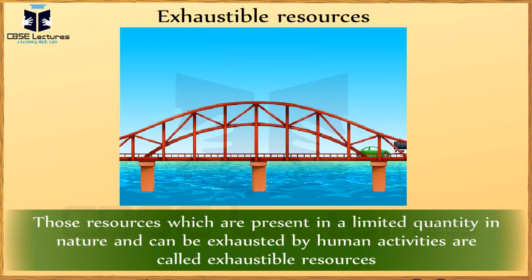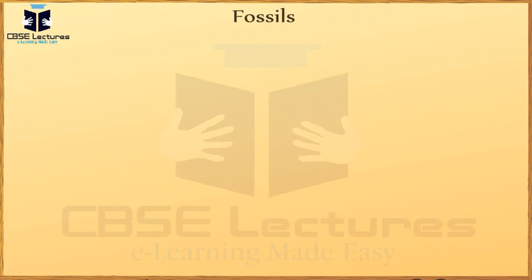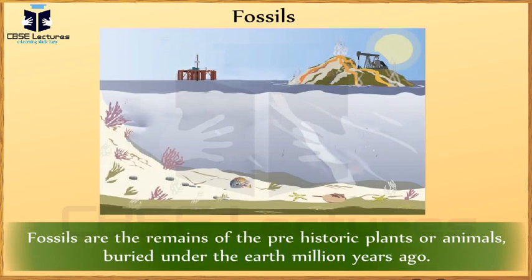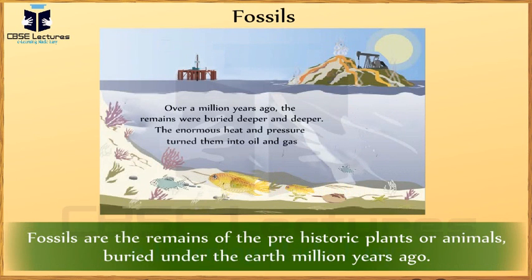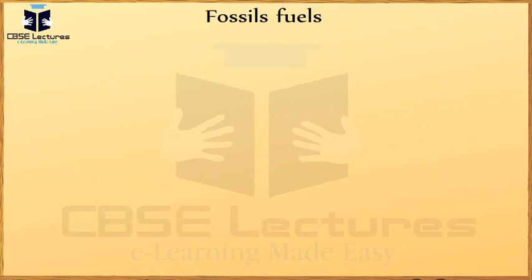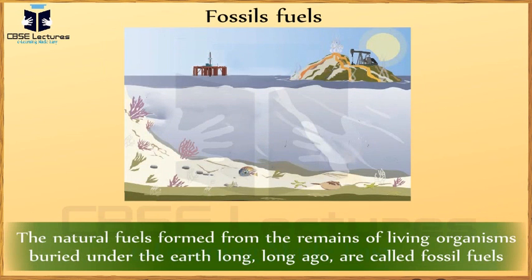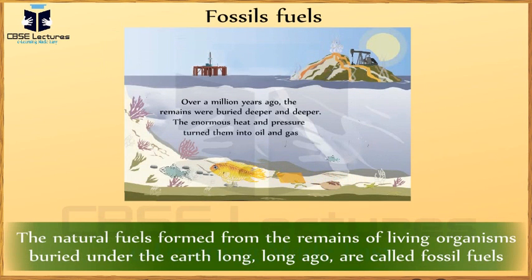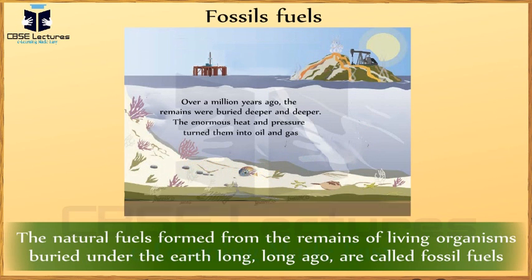Examples of exhaustible resources include fossil fuels like coal and petroleum. Student: Ma'am, what are fossils? Teacher: Fossils are the remains of prehistoric plants or animals buried under the earth millions of years ago. The natural fuel formed from the remains of living organisms buried under the earth long ago are called fossil fuels.